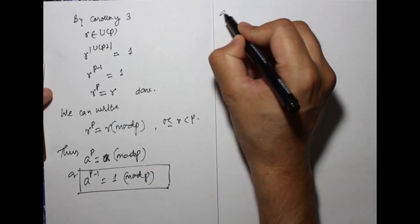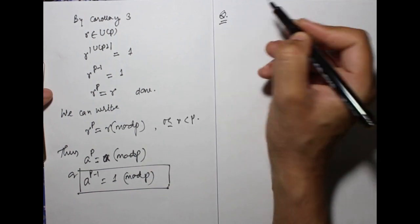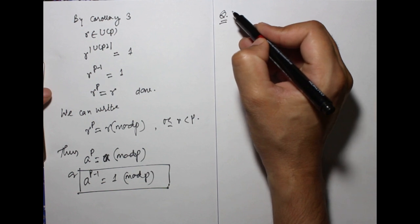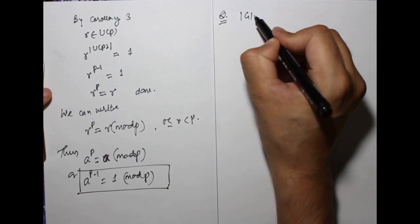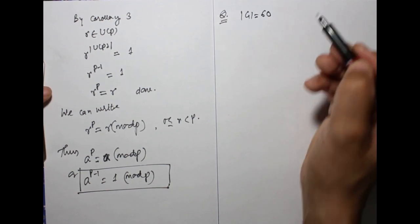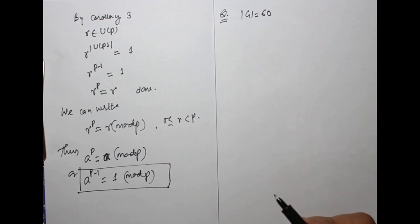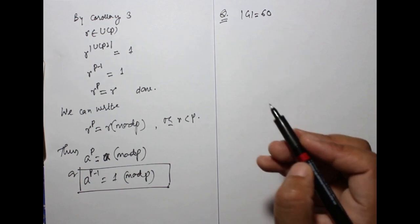This is a question based on the Lagrange theorem. Group order is 60, then what is the possible order of the subgroup?